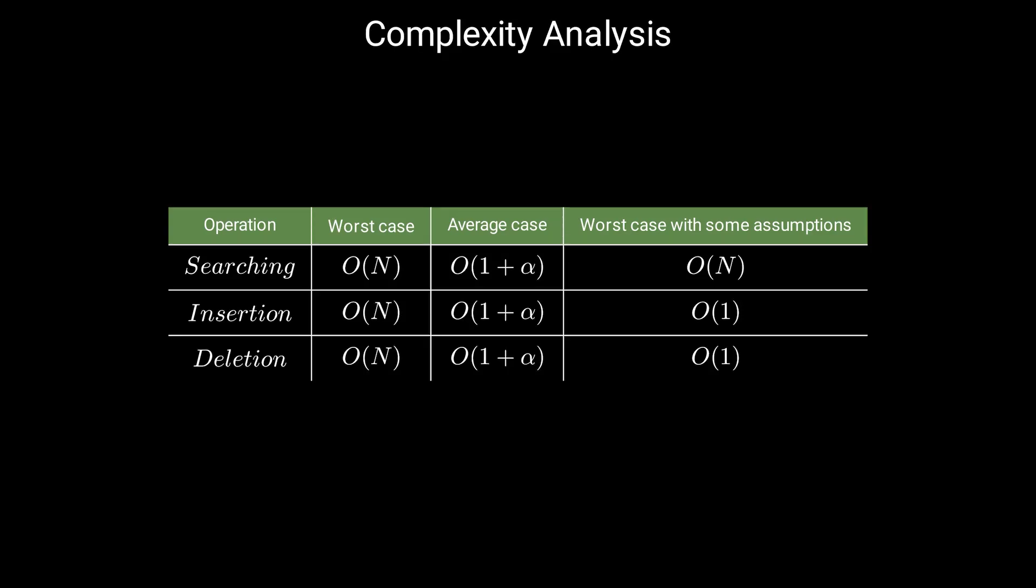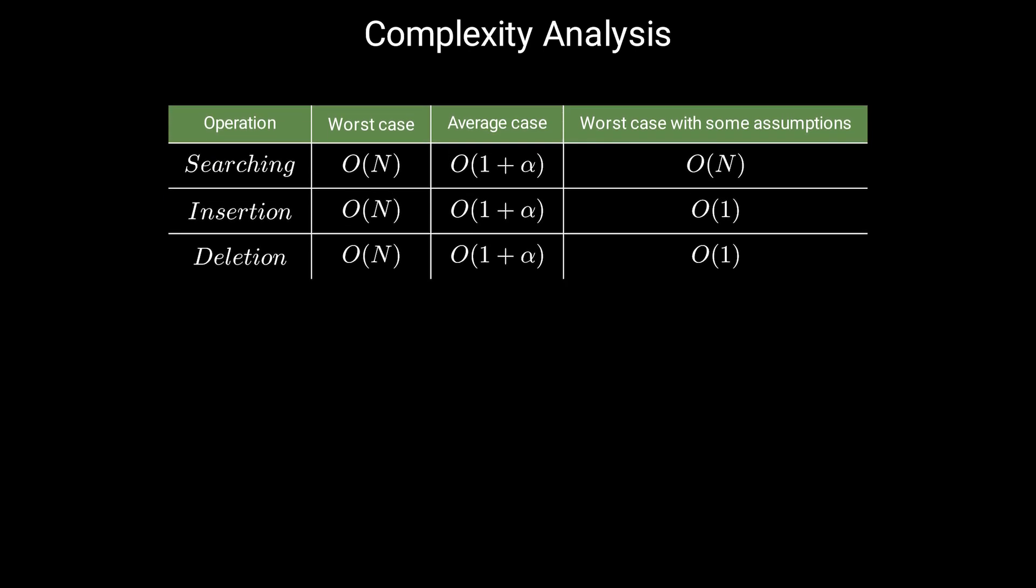So how well does hashing with chaining perform in the average case? In particular, how long does it take to search for an element with a given key? To answer this question, let's introduce a load factor alpha. For a hash map with m slots and n elements, we define a load factor as n over m. This gives us an average number of elements per slot. The average case performance depends on how well the hash function distributes keys on these m slots.